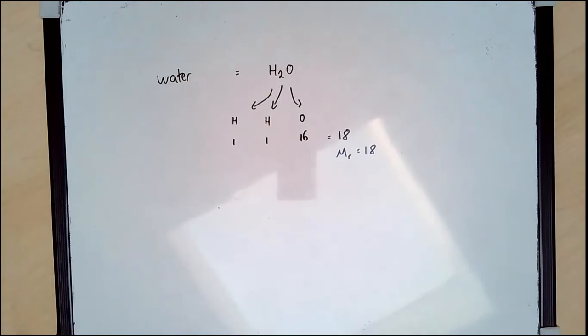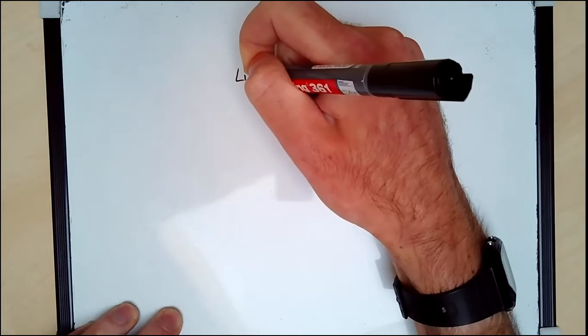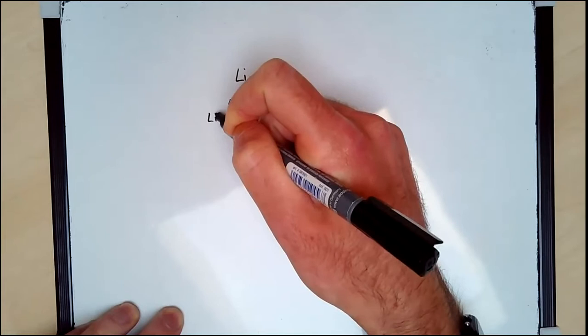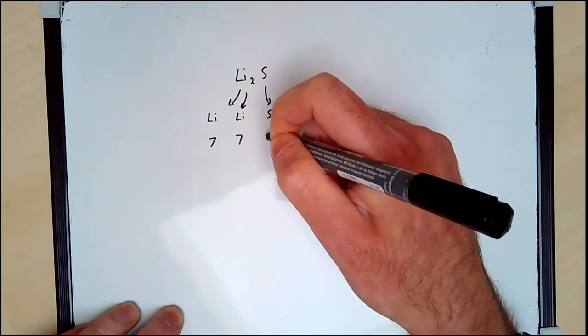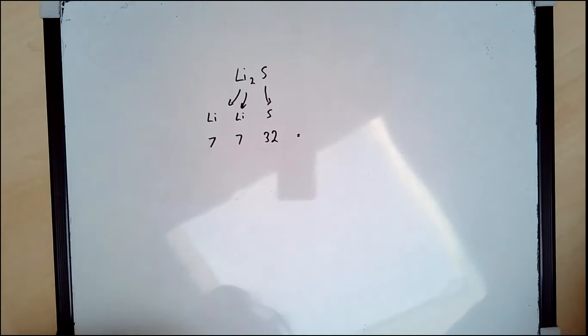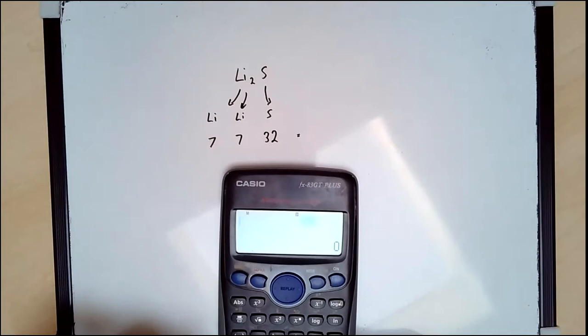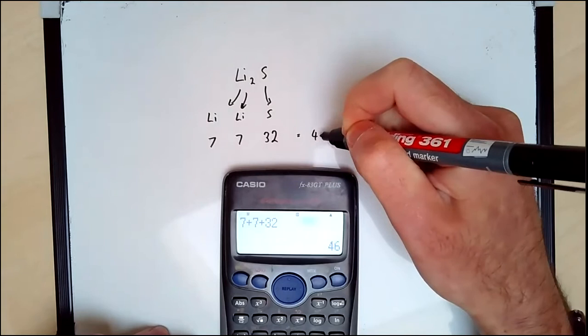Let's say we had lithium sulfide Li2S. So here I've got two lithiums and a sulfur. The mass of lithium is going to be 7, another 7, and 32. If I get my trusty calculator, 7 plus 7 plus 32 equals 46.